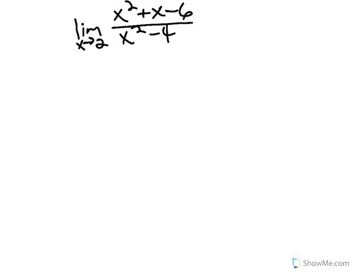When approaching a limit problem such as this, you want to start with the easiest possible strategy, which is direct substitution. By substituting 2 into your rational expression here, you get 2 squared, which is 4, plus 2, which is 6, minus 6, which gives 0 over 2 squared minus 4, which is also 0.